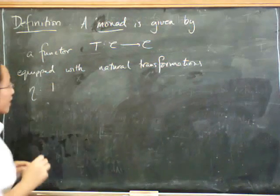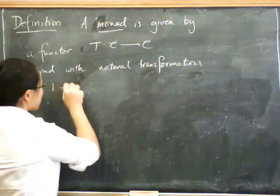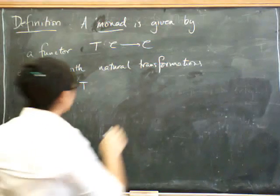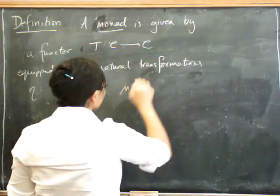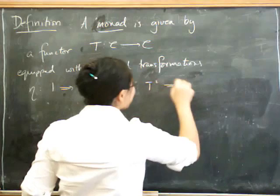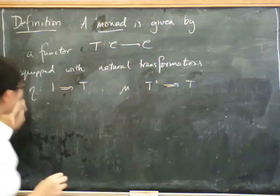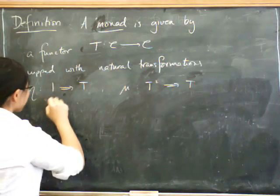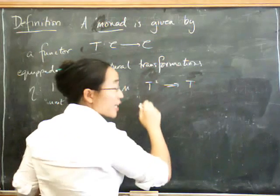Eta, which goes from the identity functor to T. I'm writing it as a double arrow because it's a natural transformation. And mu, which goes from T squared to T. And this is called the unit. And this is called the multiplication.